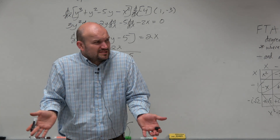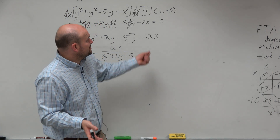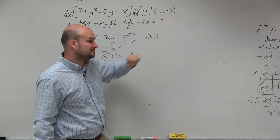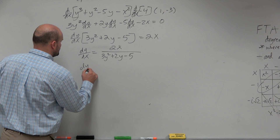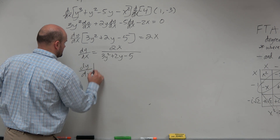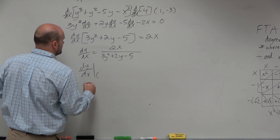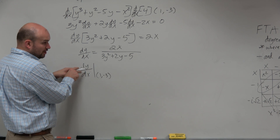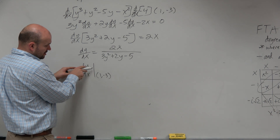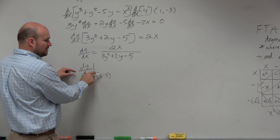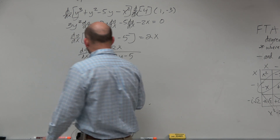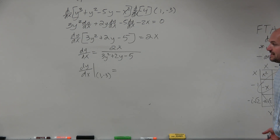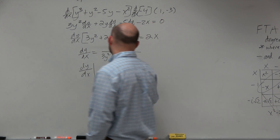But the question was asking us to find the slope at the point (1, -3). So to represent that, we want to find the slope at the point (1, -3). Now all we're going to do is insert 1 in for the x's and negative 3 in for the y's.